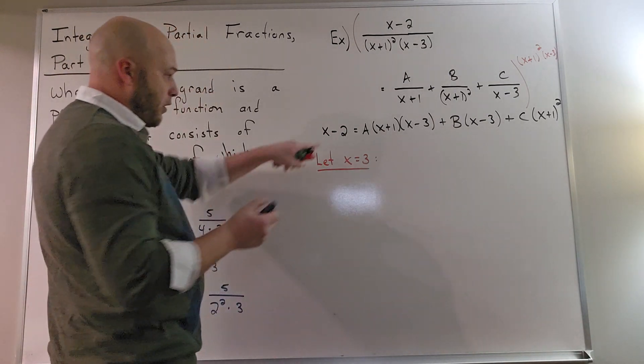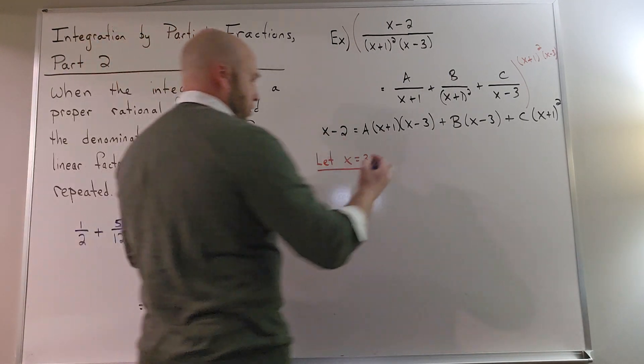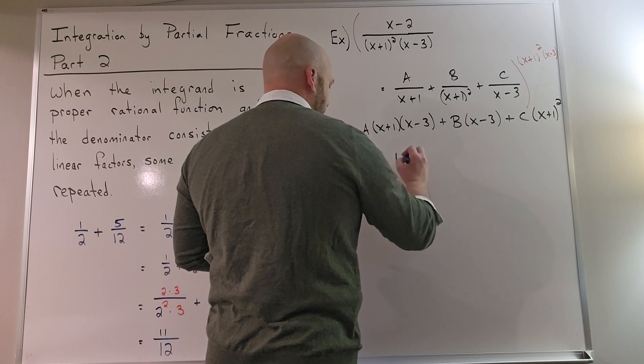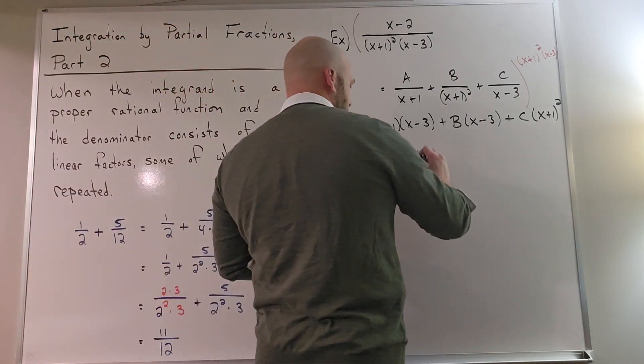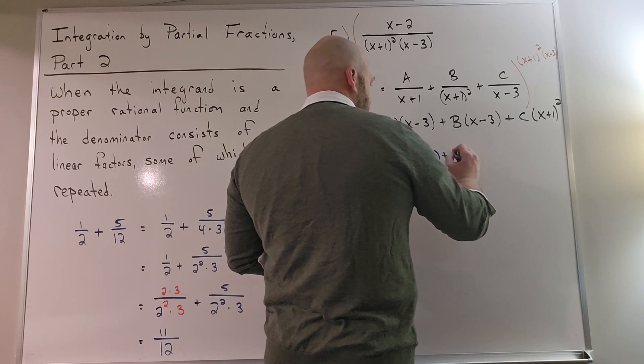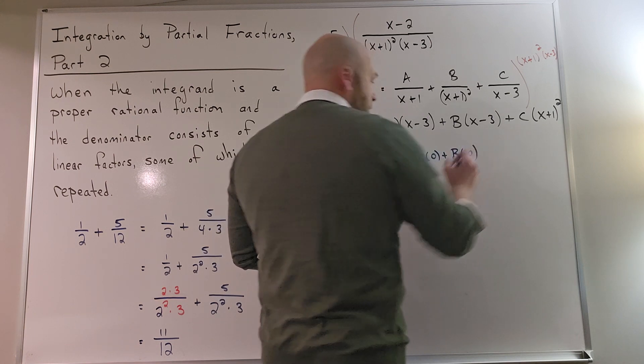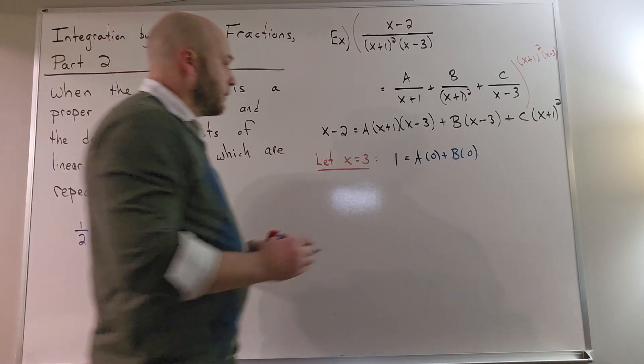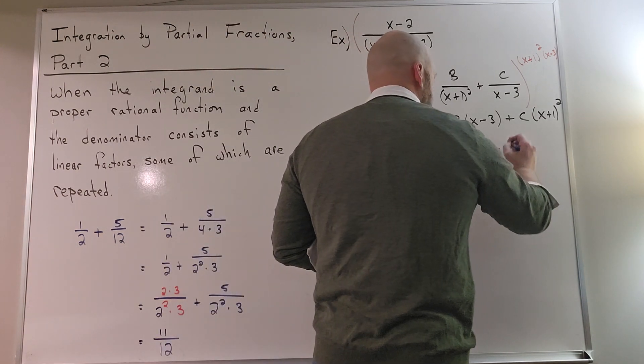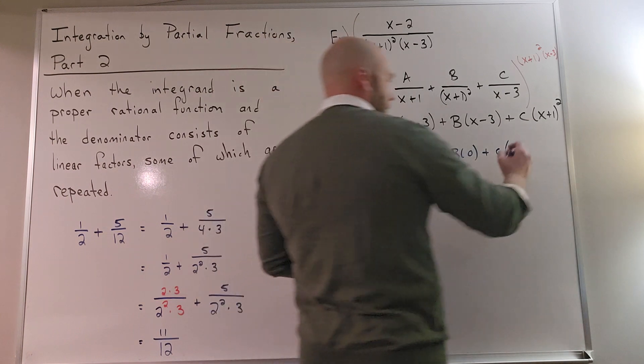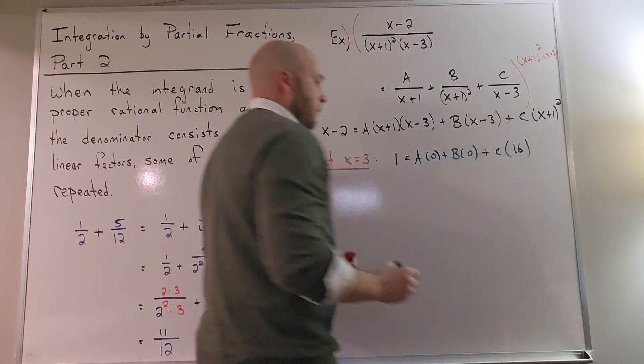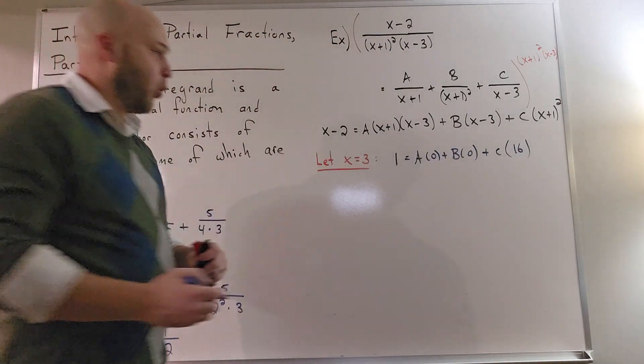Plug in x equal to 3 in this equation. I'm going to get 3 minus 2, which is 1. On the other side, I'm going to get a times 0, plus b times 0, plus c times, well, 3 plus 1 is 4, 4 squared would be 16. Therefore, c is 1/16.